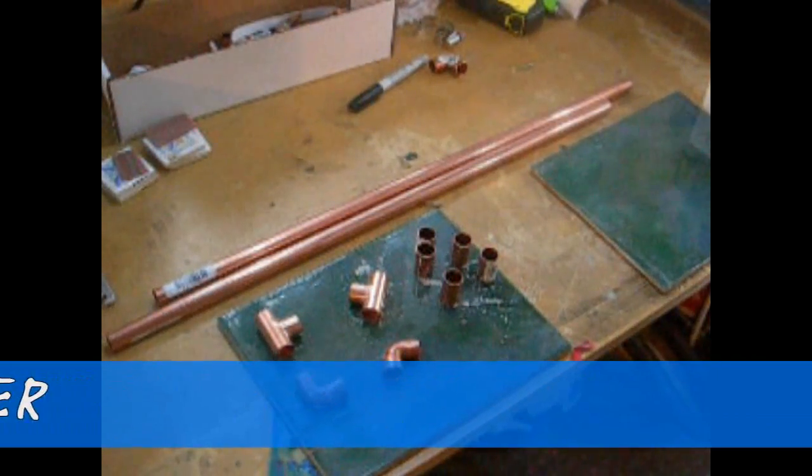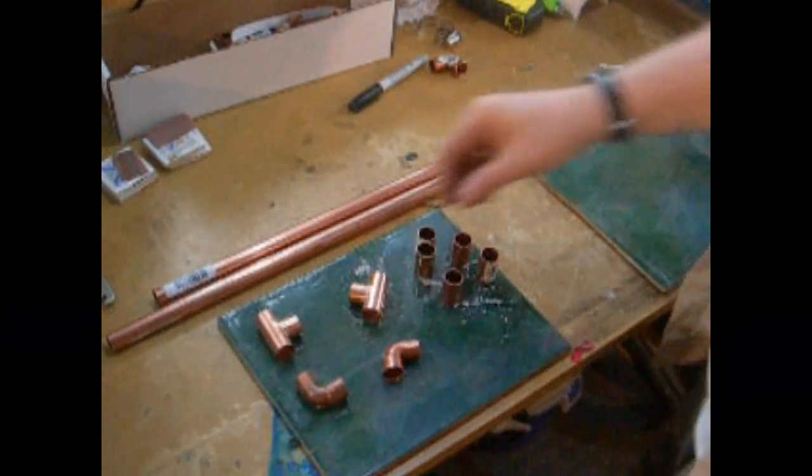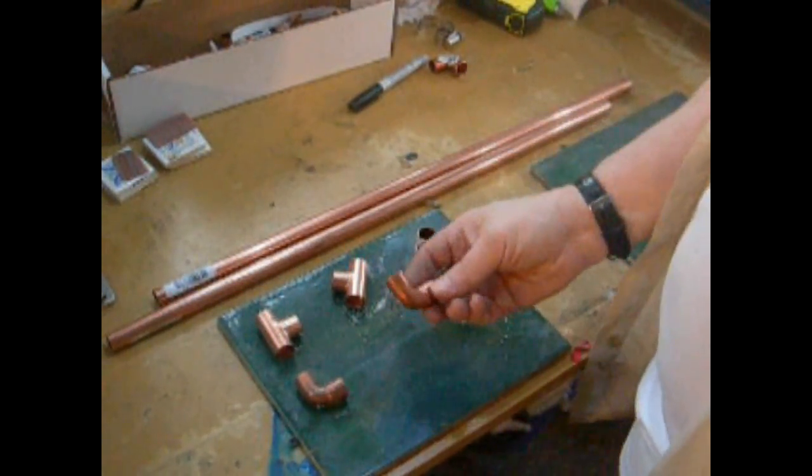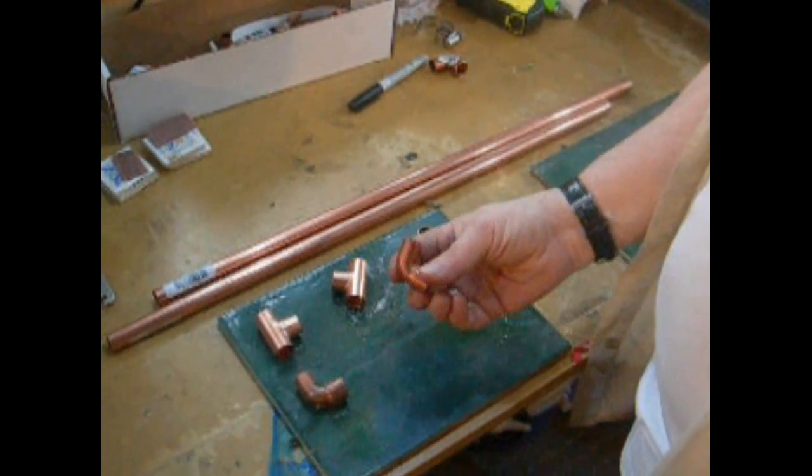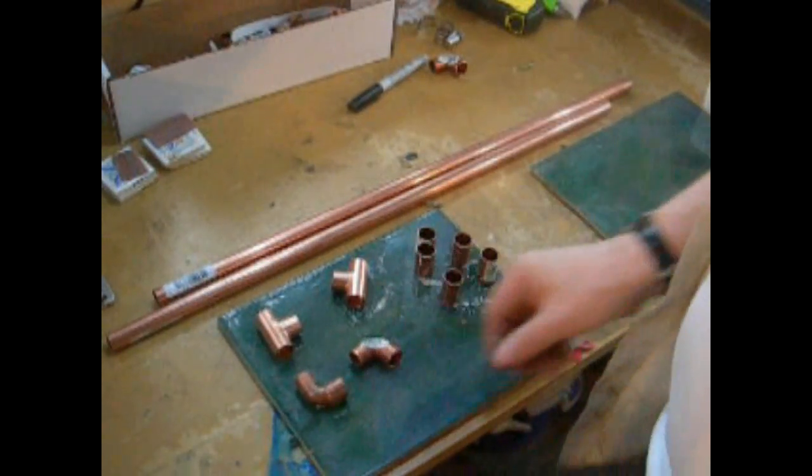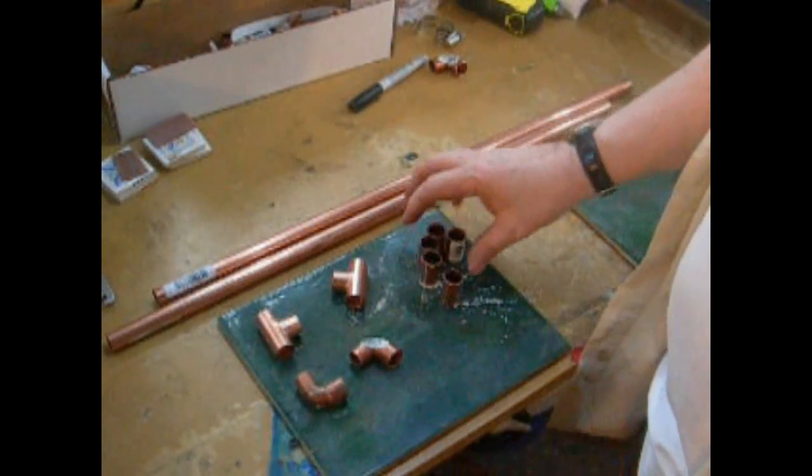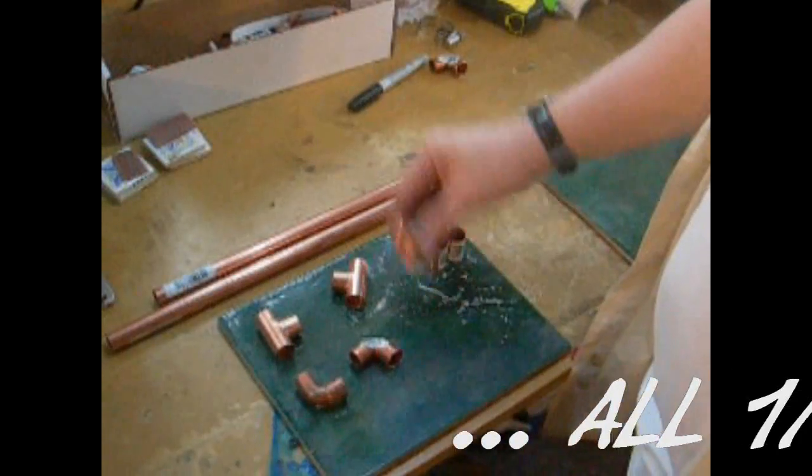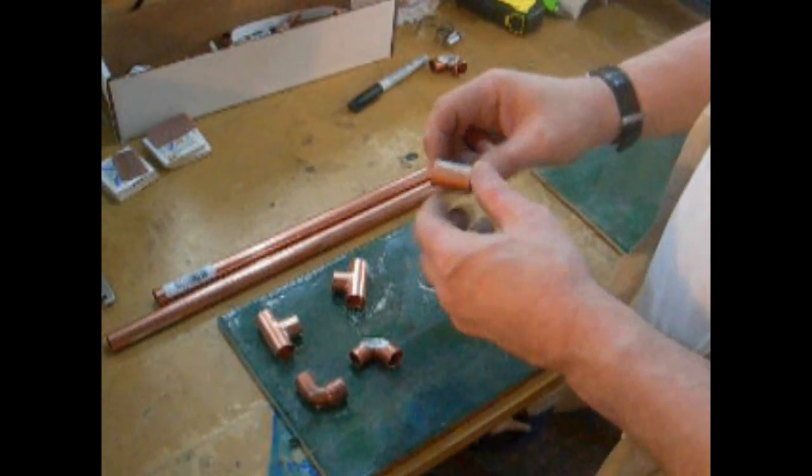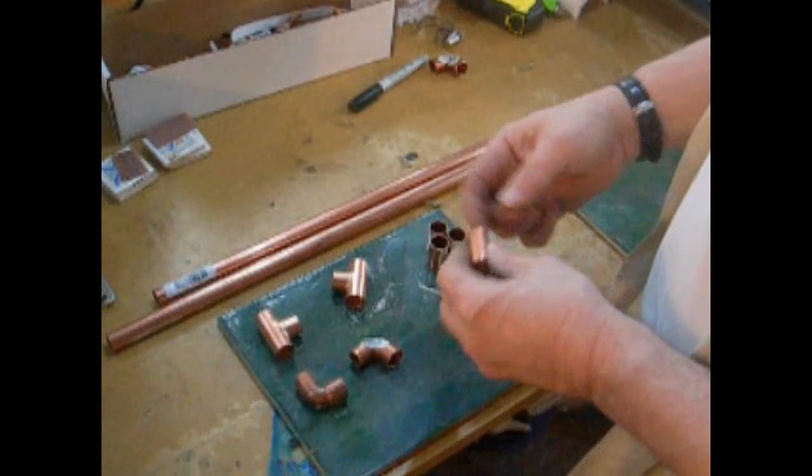To build my heat exchanger, here's what I'm using: just two tees, two 90s, but these are called street—one side's female and the other side's male. Then I'm using five of these pipe-to-pipe fittings. These have no stops in it, so the pipe can slide right through there.